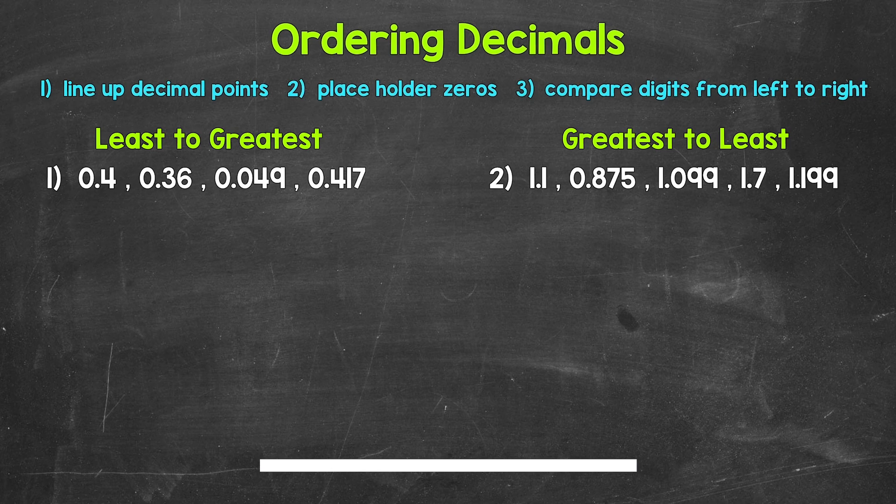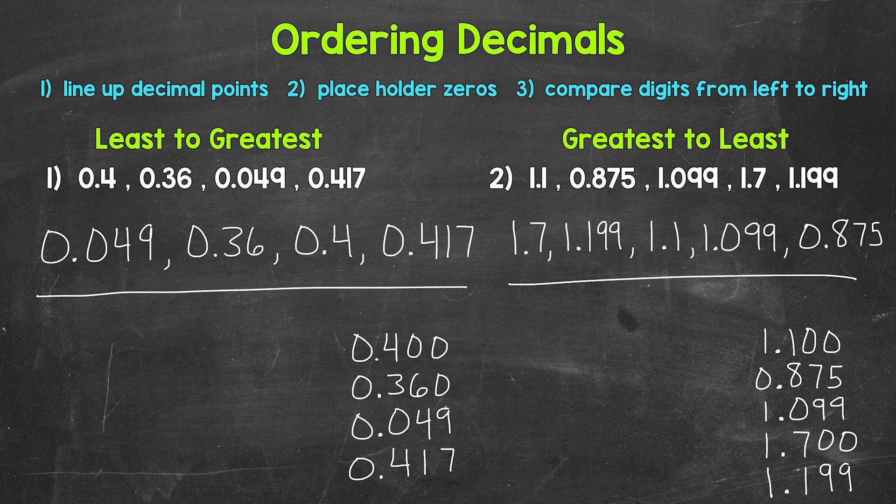Okay, so that's three minutes. Let's go over the answers. For number one, least to greatest, we should have 49 thousandths, then 36 hundredths, then four tenths, and lastly 417 thousandths. For number two, greatest to least, we should have 1 and 7 tenths, then 1 and 199 thousandths, then 1 and 1 tenth, then 1 and 99 thousandths, and then lastly 875 thousandths.